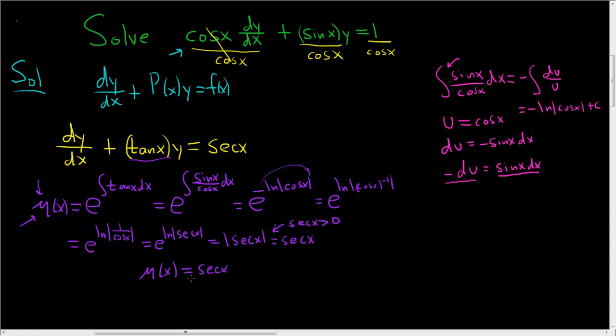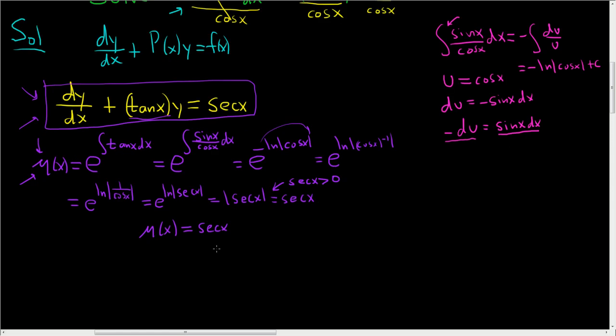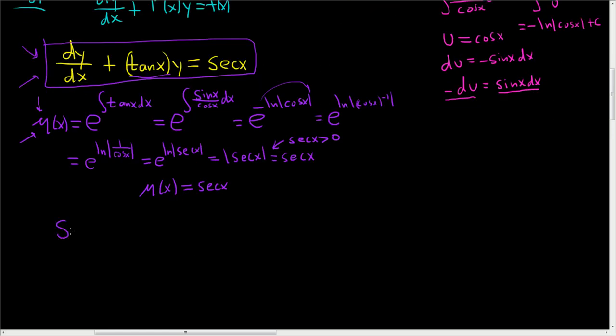So now we're going to multiply our equation by secant x. So when we do that, we get secant x times dy/dx plus secant x tangent x times y. And then here we get secant squared.